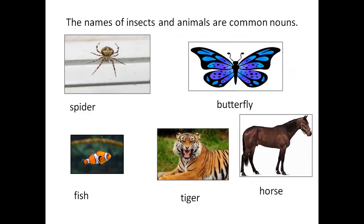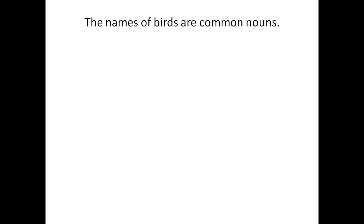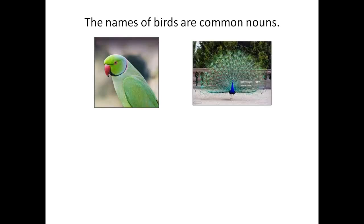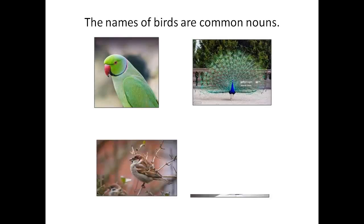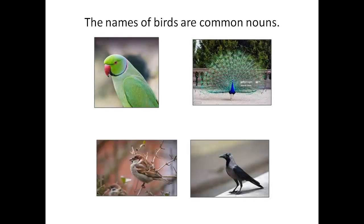Remember that the names of insects like spider and butterfly are Common Nouns. The names of animals like fish, tiger and horse are Common Nouns. The names of birds are Common Nouns — for example, parrot, peacock, sparrow, crow.